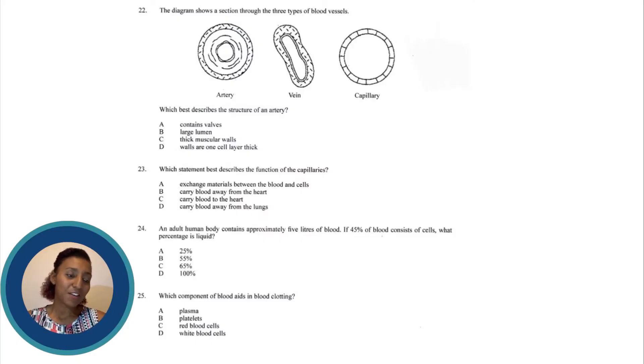Question number 22 says the diagram shows a section through the three types of blood vessels. Which best describes the structure of an artery? A contains valves, B large lumen, C thick muscular walls or D walls are one cell layer thick.